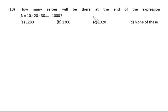Now in this problem, how many zeros will be there at the end of the expression N that is 10 into 20 into 30, and the counting is going up to 1000? Let's do N is equal to...